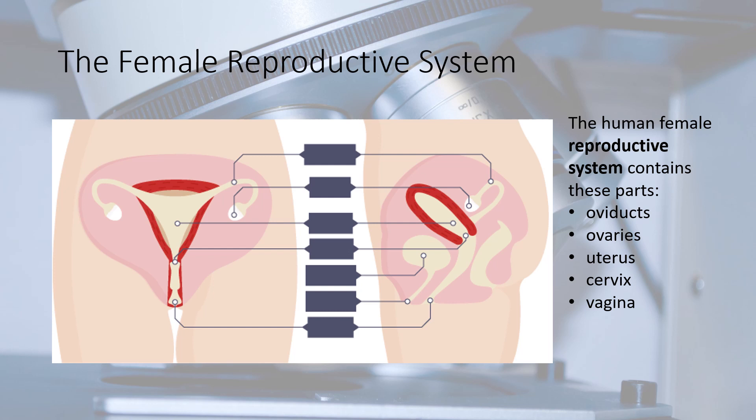The human female reproductive system is made up of oviducts, ovaries, the uterus, the cervix, and the vagina.